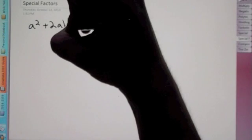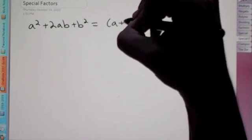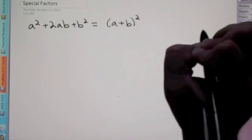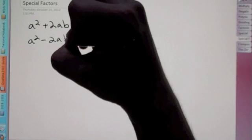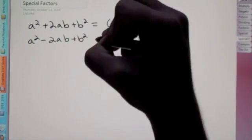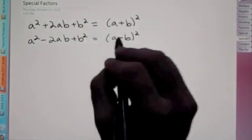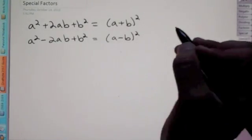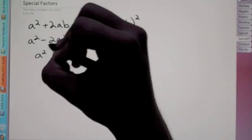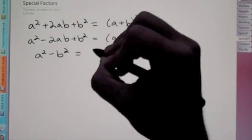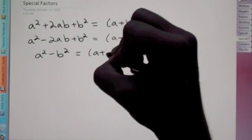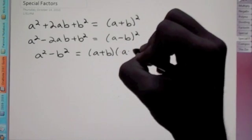If you get something in the format of a squared plus 2ab plus b squared, we can rewrite it as (a + b) squared. If you get a squared minus 2ab plus b squared, that equals (a - b) squared. And if we have something in the format of a squared minus b squared, we can rewrite it as (a + b)(a - b).